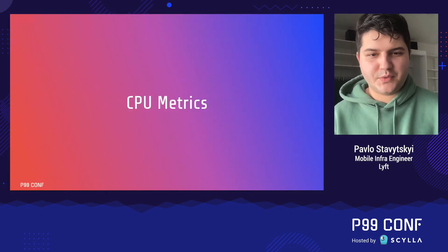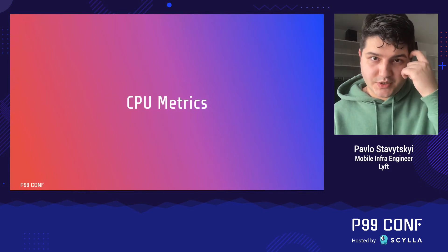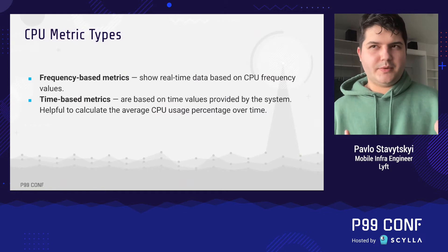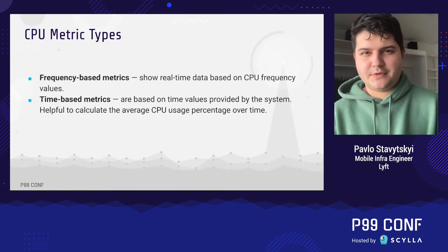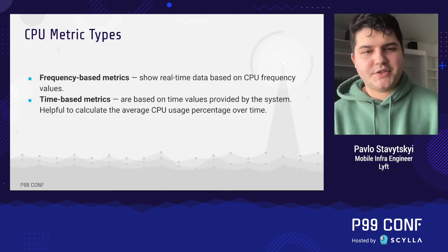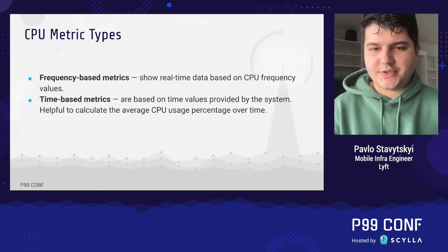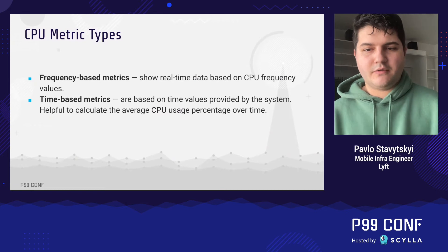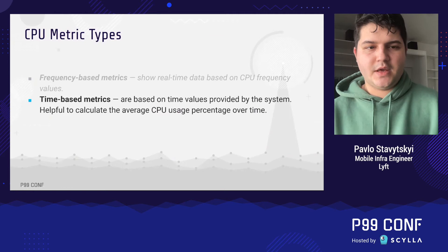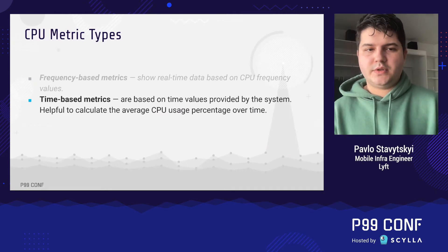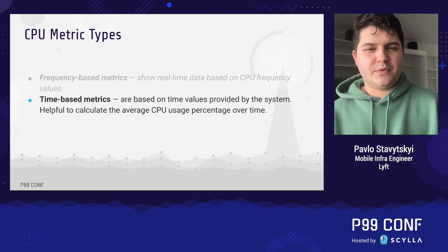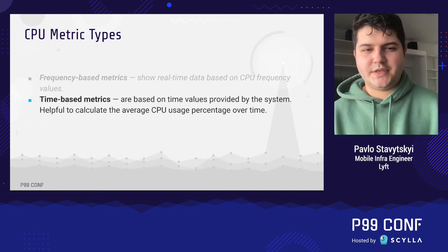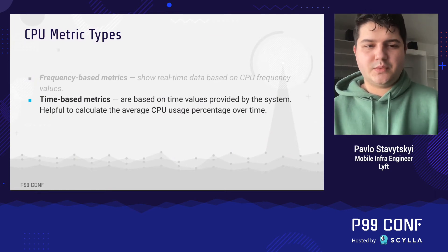Now for the most interesting part: the CPU metrics themselves. All available metrics can be categorized into two primary types. Frequency-based metrics show real-time data based on CPU frequency values. Time-based metrics are based on time values provided by the system, and are helpful to calculate average CPU usage over time as a percentage — which is what we actually need. For this task we will avoid frequency-based metrics, since high-frequency runtime collection on user devices would overload them. We'll stick with time-based metrics.